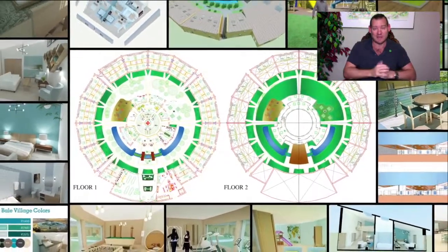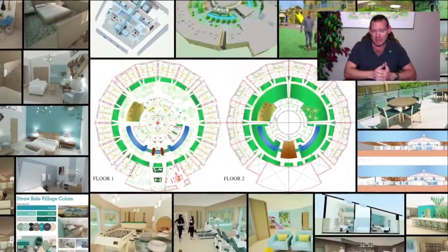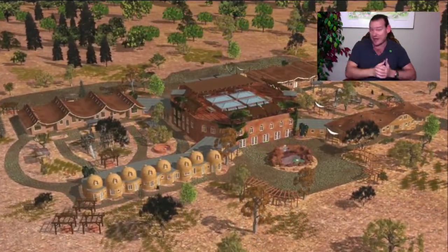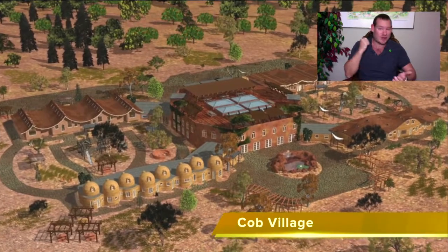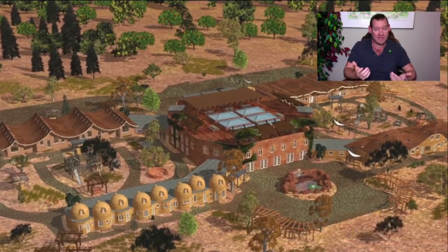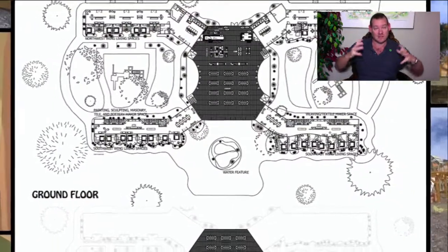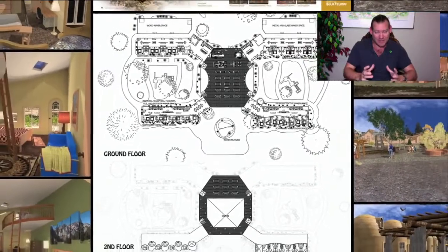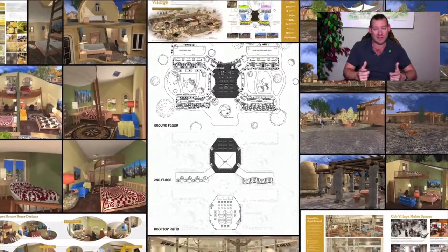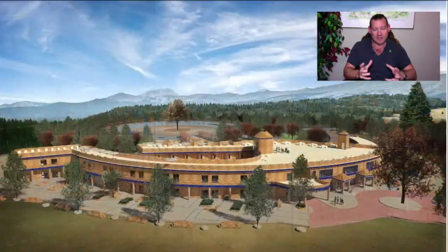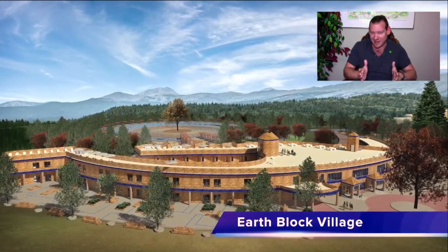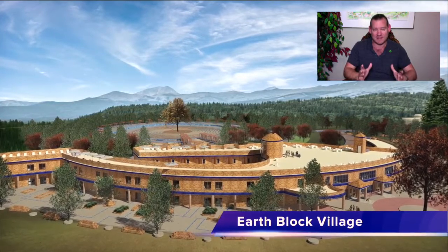Freedom is one of our highest values — freedom for people to believe what they want to believe, to love the way they want to love, to worship as they choose, to eat high quality food, drink clean water, breathe clean air, educate their kids as they want, and have control over the aspects of their environment. The One Community model is designed around seven different sustainable village models and the duplicable city center to build that environment.